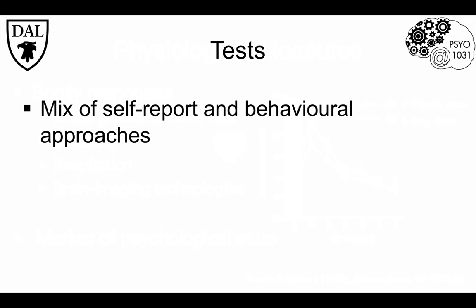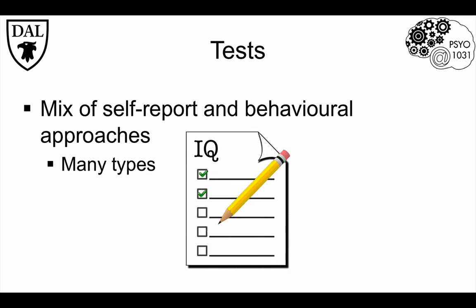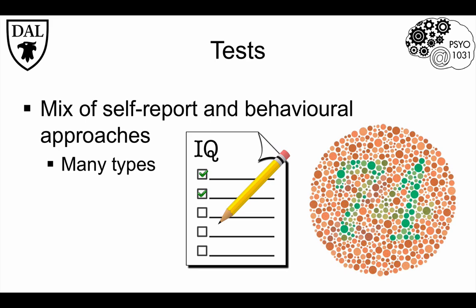Last are tests, which are a mix of self-report and behavioral approaches. There are many types, but they usually involve some sort of performance measure, like an IQ test, but sometimes they involve perceptual tasks, like the Ishihara colorblindness test shown here. If you have red-green colorblindness, this should look like a bunch of dots; if not, you should see a number in the middle.